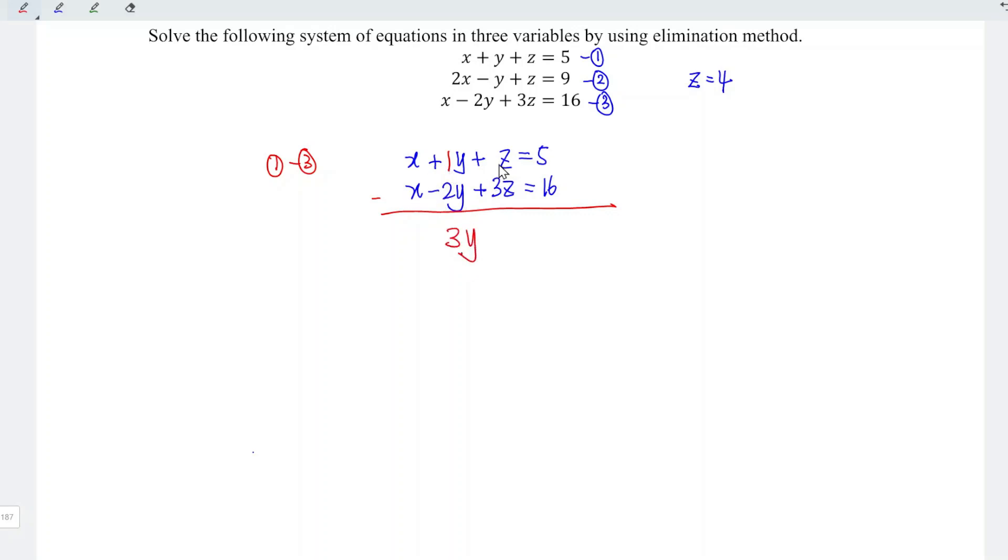And next is 1z minus 3z, which is minus 2z. And this is equal to 5 minus 16, which is equal to minus 11.